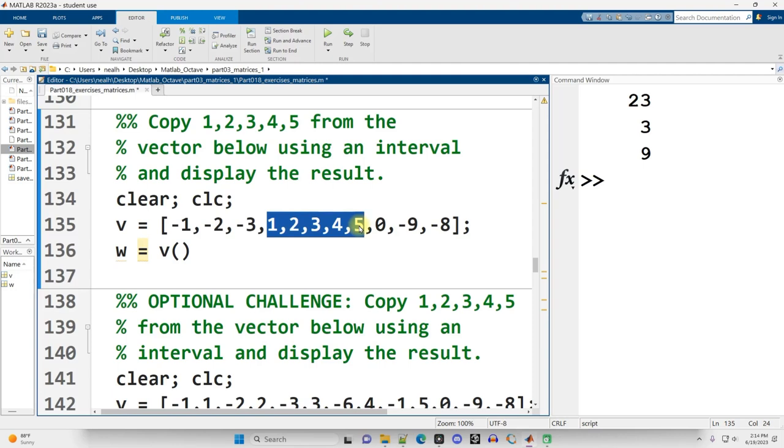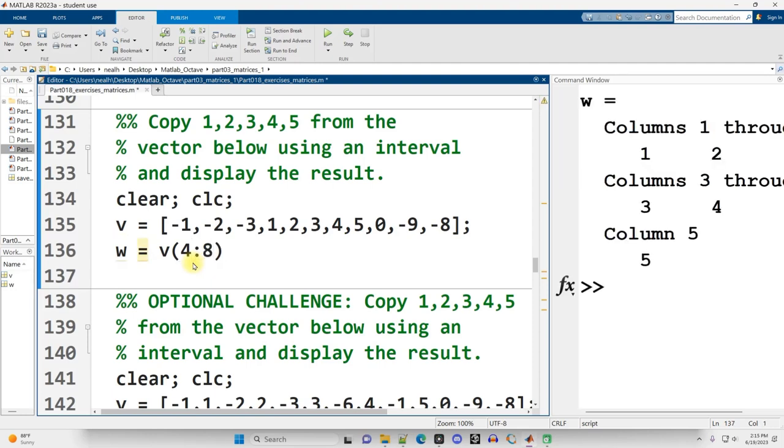So 4 through 8 is what I'm looking for. Colon 4, 4, colon 8, excuse me. And there we go. 1, 2, 3, 4, 5. Or just easier to read. Like so.